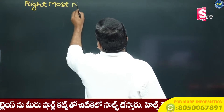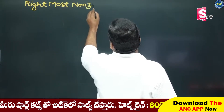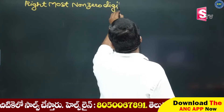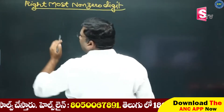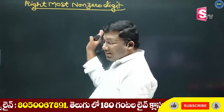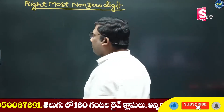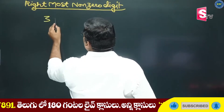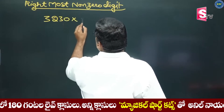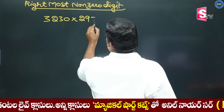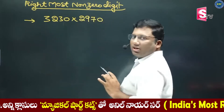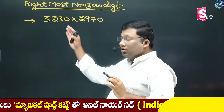This is the magic compound interest session. The calculation will be very easy. The rightmost non-zero digits — right side to left side. The first step is to write the order. It's very important to write the calculation.